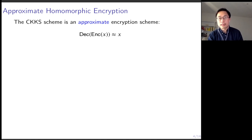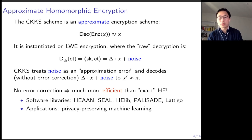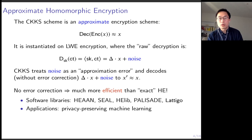but rather returns something close to X. The scheme is instantiated based on standard LWE encryption, where the raw decryption function computes an inner product between the secret key and the ciphertext. The result is a noisy encoding of the plaintext X. Typically, with exact FHE schemes, you would need to apply an error correction code to extract the plaintext X.